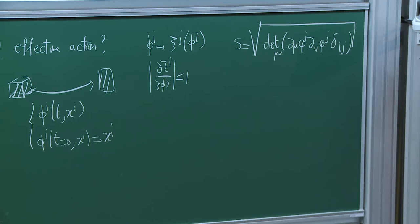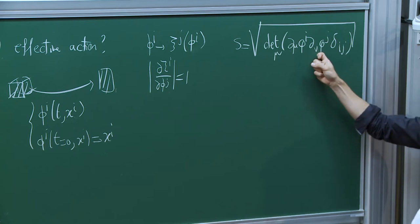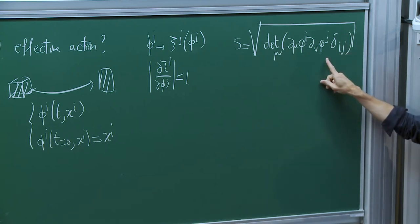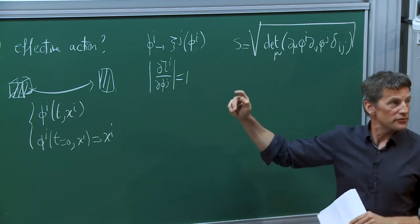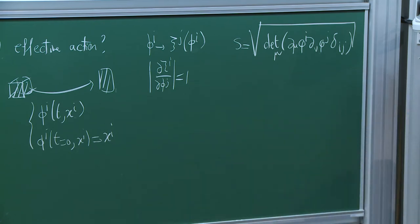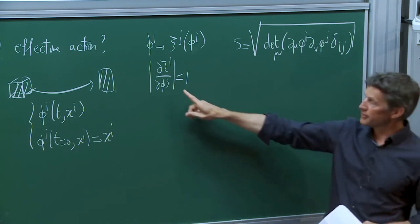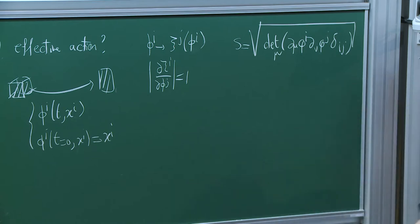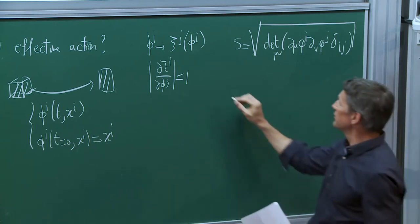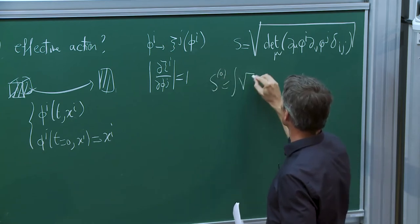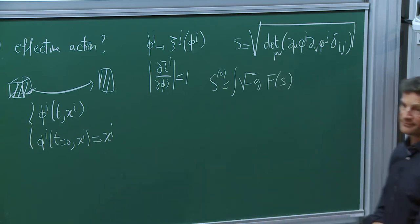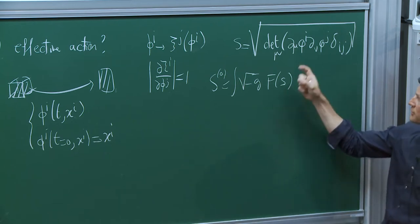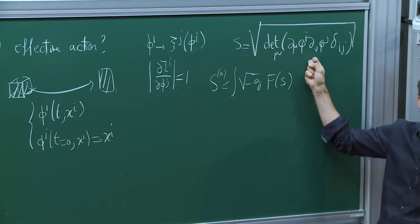If you write down an object involving derivatives of the phi^i's, take the determinant of (partial phi^i / partial x^mu)(partial phi^i / partial x^nu), and take the square root, you build an object that clearly has this volume-preserving diffeomorphism symmetry — because if you make a change of variables, you pick up the determinant which then drops out. This is familiar from membrane effective actions, which also enjoy volume-preserving diffeomorphism invariance. You can in principle write down an action that depends only on this object S.